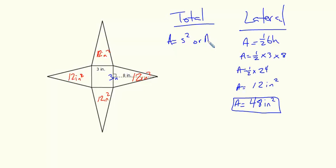Or you can use base times the height. Either way you're going to get three times three. So three times three is nine. Nine square inches. So my total surface area. All I have to do is just add nine square inches to the 48 square inches. And that's going to give me 57 square inches for my total surface area.